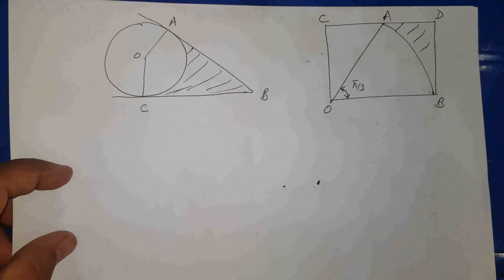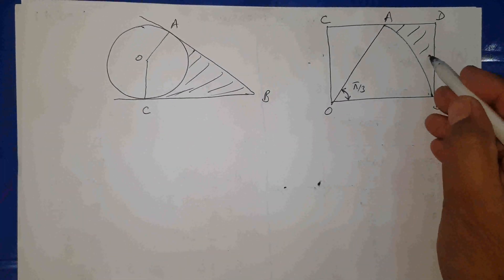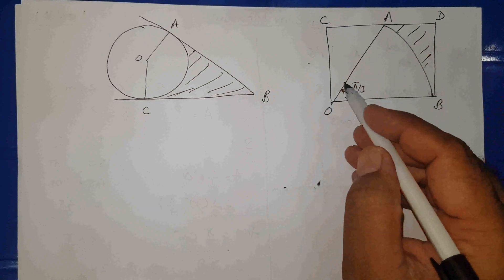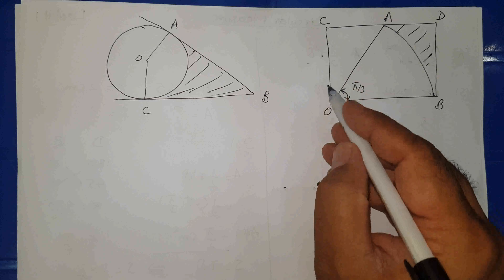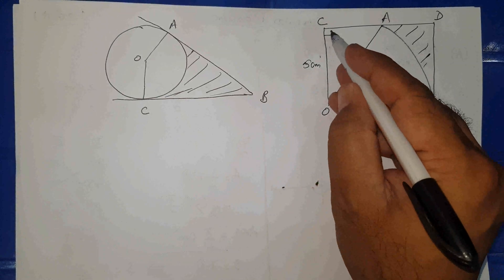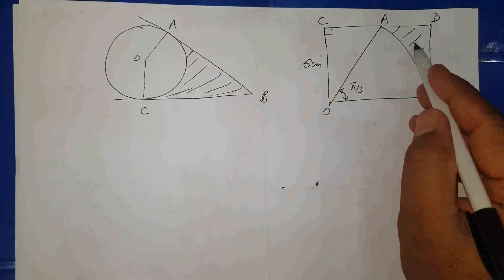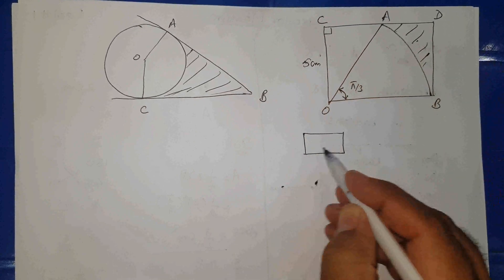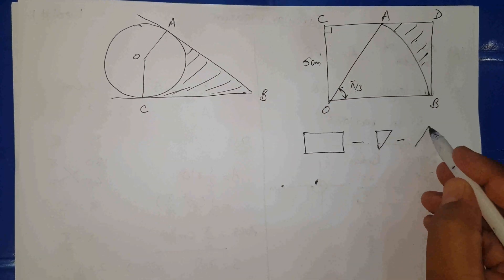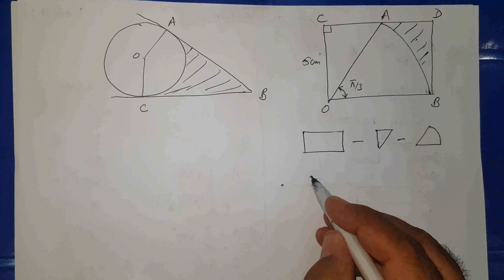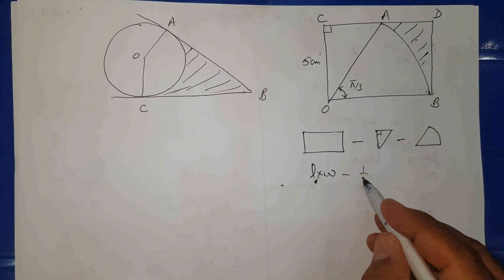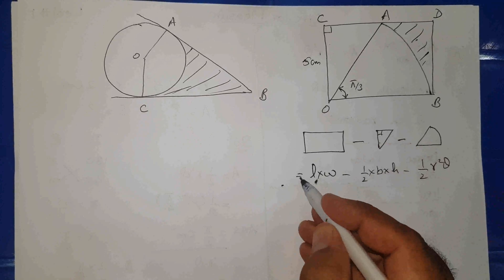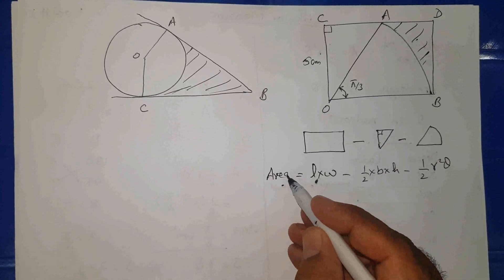We have two examples. In this one, if we need to find the shaded area, there is a rectangle with a sector. Given 5 cm and 90°, the plan of action is: rectangle area minus triangle area minus sector area. You know rectangle area is length × width, triangle area is (1/2) × base × height, and sector area is (1/2) r² θ. This gives us the answer.